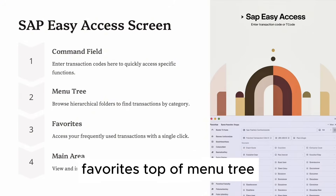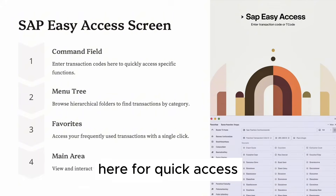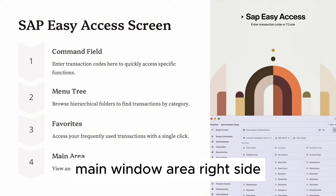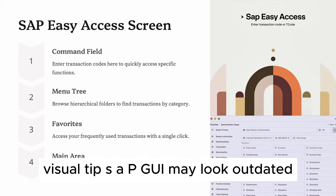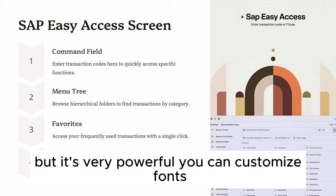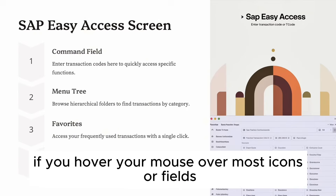Favorites (top of menu tree) — you can save frequently used T-codes or paths here for quick access. Main window area (right side) — this is where the screens or transactions will open. Visual tip: SAP GUI may look outdated, but it's very powerful. You can customize fonts, layout, and colors. Tooltips appear if you hover your mouse over most icons or fields.